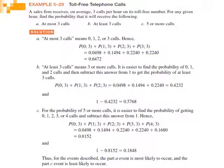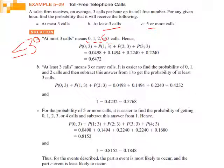A firm receives, on average, three calls per hour. For any given hour, find the probability of receiving: (A) at most three calls, (B) at least three calls, and (C) five or more calls. For part A, 'at most three' means less than or equal to 3, so we need P(0) + P(1) + P(2) + P(3), using the addition rule.